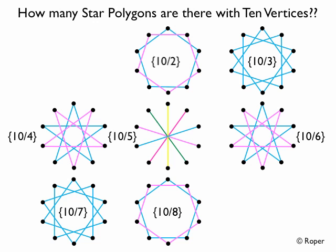Next, let's look at 10,2. If we reduce 10,2, it reduces to 5,1. And 5,1 is a polygon, not a star polygon — it's five equally spaced points on a circle with each one connected to the next. So 10,2 gives us two pentagons. If we take off the top pentagon, it's easier to see: 5,1 is just a regular pentagon with five sides, and 10,2 is two of these pentagons.